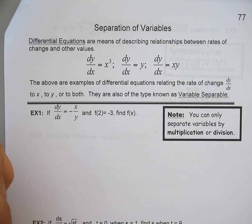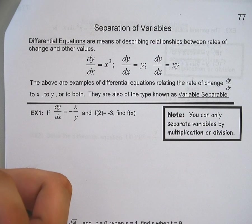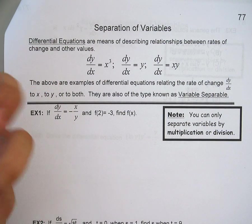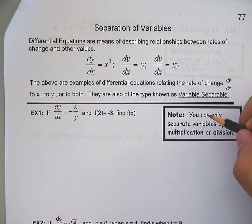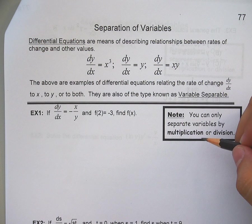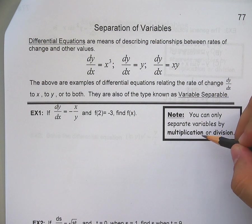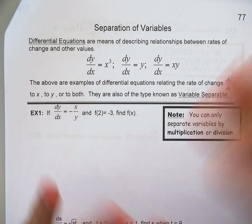What this means is that I can actually take and separate these two variables and get them onto their own respective sides of an equation. Now, there is something very important that you do have to note here. You can only separate variables by multiplication or division. It's the only way that I can do separation of variables. If it involves adding or subtracting, it's a no-go.